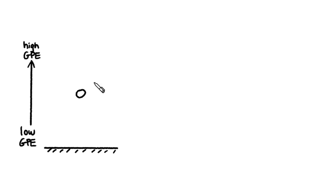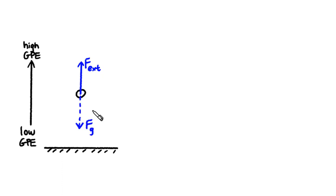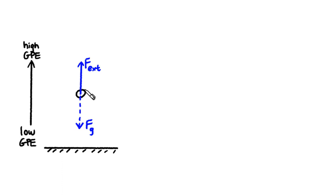Let's use GPE as an example. If you want to move a mass to a higher position, you have to exert an upward external force. Why? Because you have to overcome the hidden force — the downward gravitational pull. The external force must match the gravitational pull exactly if you were to move the mass without gaining any speed. You don't need to gain any KE because you want the work done by the external force to all go into the increase in GPE.